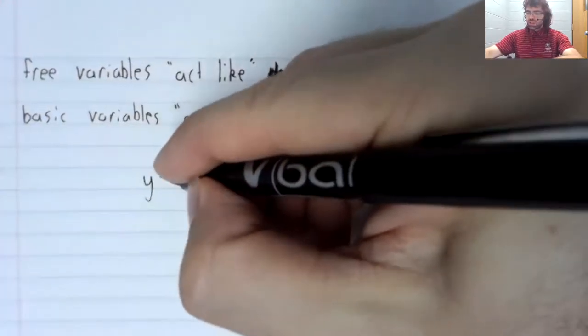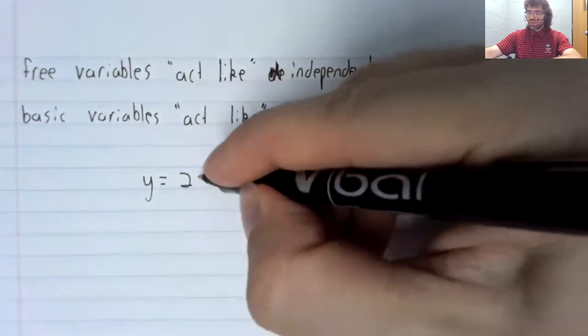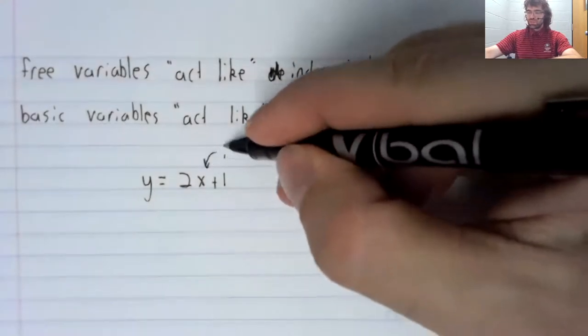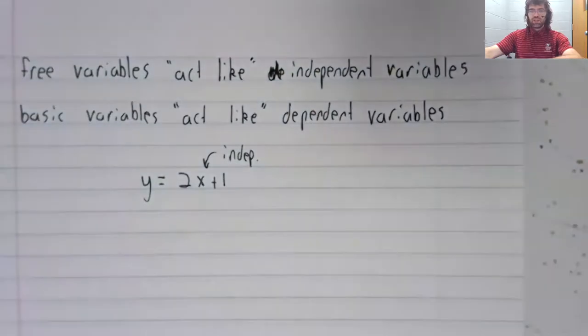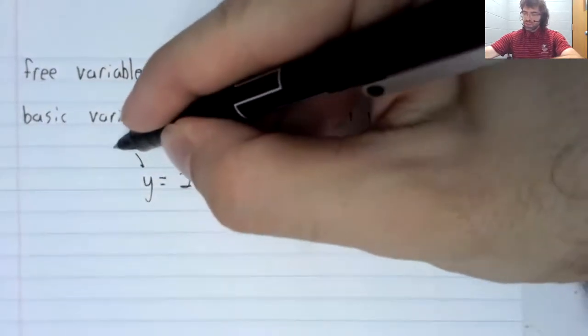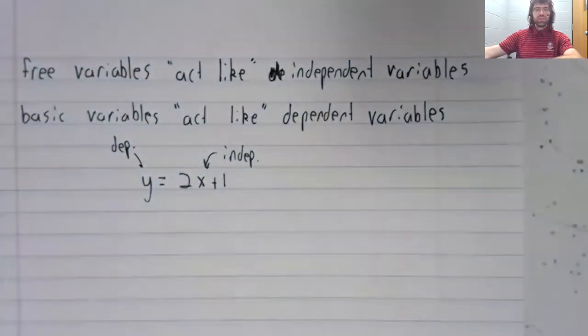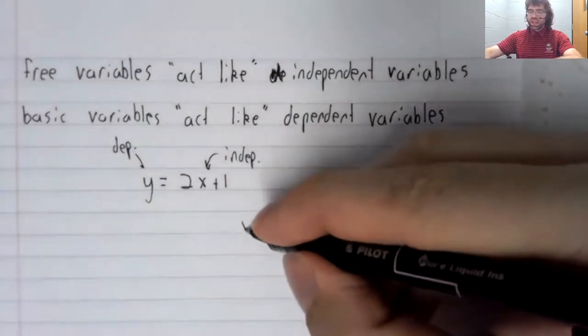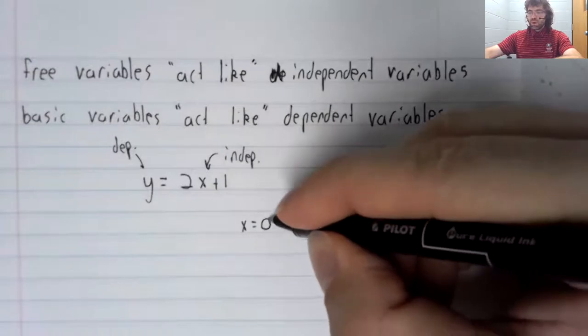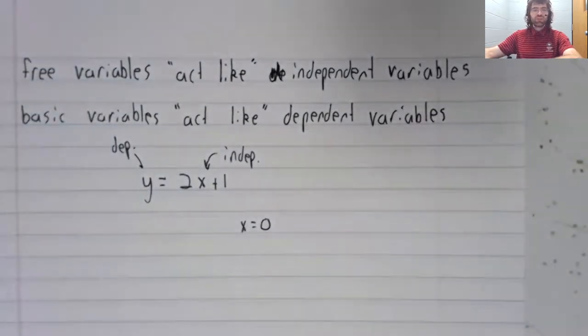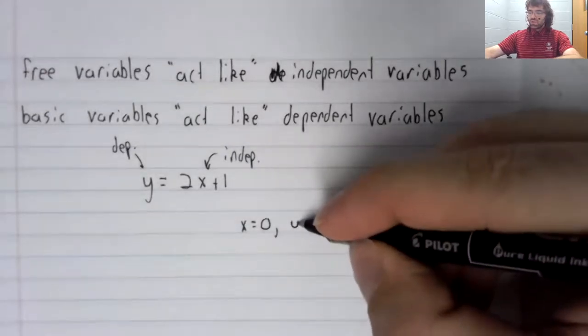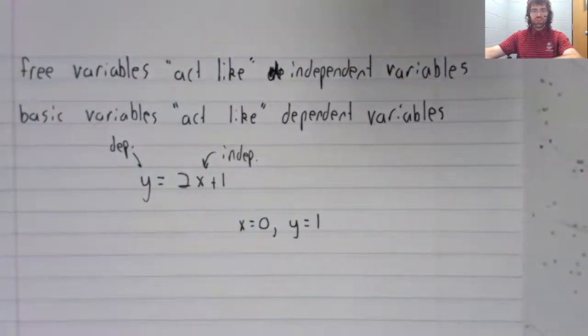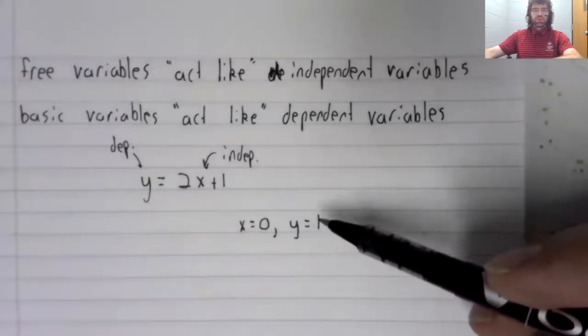Let's look at an example not from linear algebra, but from high school algebra, where you have an independent and a dependent variable. The independent variable could be anything. Like if you want x to be zero, that's fine. Once you've decided what the independent variable should be, the dependent variable is determined.